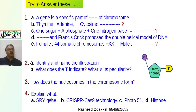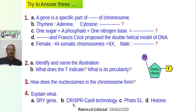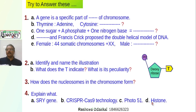Last question: The SRY gene is a specific gene seen in the Y chromosome that promotes the growth of testes in the embryo. CRISPR-Cas technology was proposed by Jennifer A. Doudna and Emmanuelle Charpentier for gene editing. Photo 4251 is a famous X-ray diffraction picture taken by Rosalind Franklin, from which James Watson and Francis Crick proposed the double helical model of DNA. Histone is a protein seen in chromosomes. Thank you.